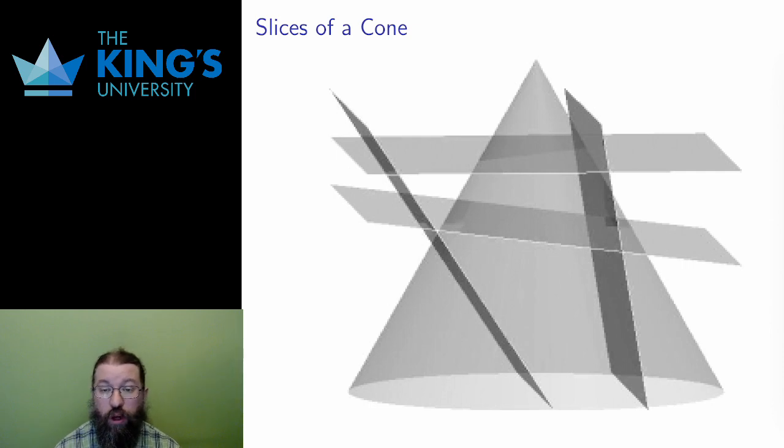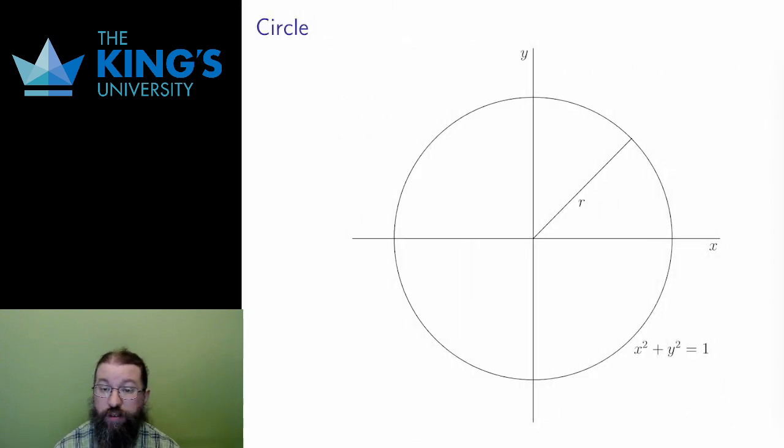Now I'll go through the four conics individually, describing their shapes and equations. The first conic is the circle. As a slice, it is a perfectly horizontal slice. It's this slice you can see in the diagram. Geometrically, a circle is all points which are a fixed distance, the radius, from the center.